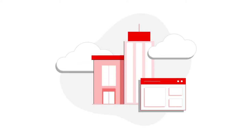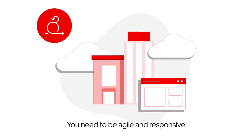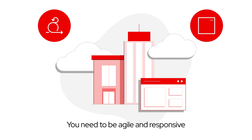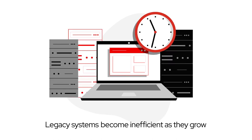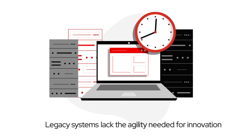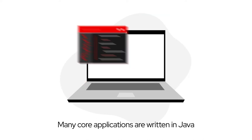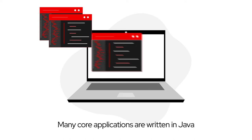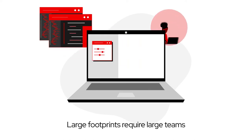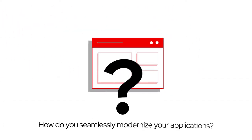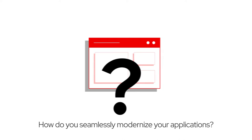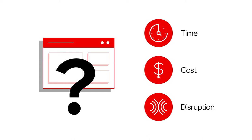If you want to stay competitive in today's marketplace, you need to build agile and responsive business applications quickly. But many organizations experience challenges in keeping their core business applications updated and maintained. Legacy systems, while reliable, become more inefficient as they grow and lack the agility businesses need for innovation. And many of their core applications are written in Java, originally designed for a pre-cloud era, when large footprints were typical and led to complex applications and large teams needed to maintain them. So how do you seamlessly modernize your business-critical applications without the time, cost, and disruption of retraining your team?